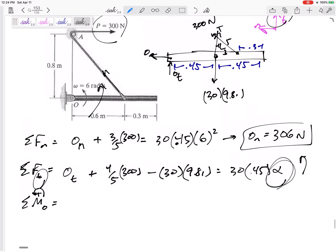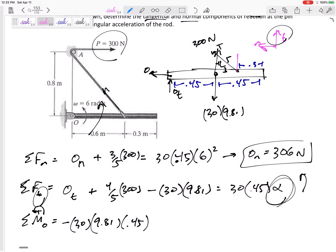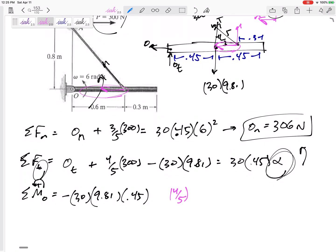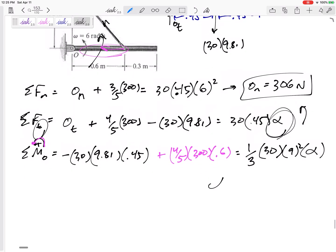O N goes straight through it. O T goes straight through it. The weight 30 times 9.81 has a moment arm 0.45 creating a negative moment. Now this tension, the three fifths component would go straight through it, but the four fifths component of 300 would have a moment arm of 0.6. And that would be positive, leading to counterclockwise moment. That's it. That's the only thing that creates a moment. And so this equals I alpha, I about O is one third ML squared alpha. I can solve for that alpha 1.43 radians per second squared.